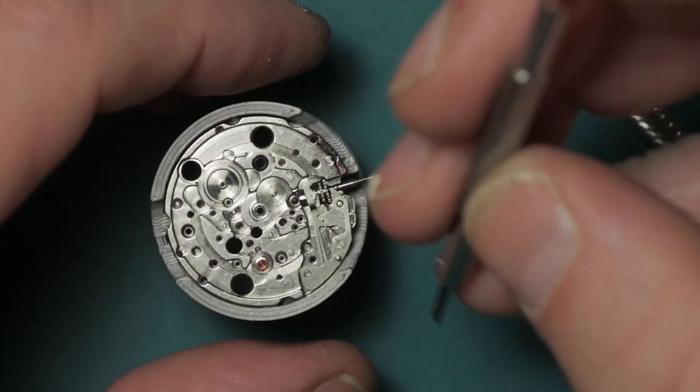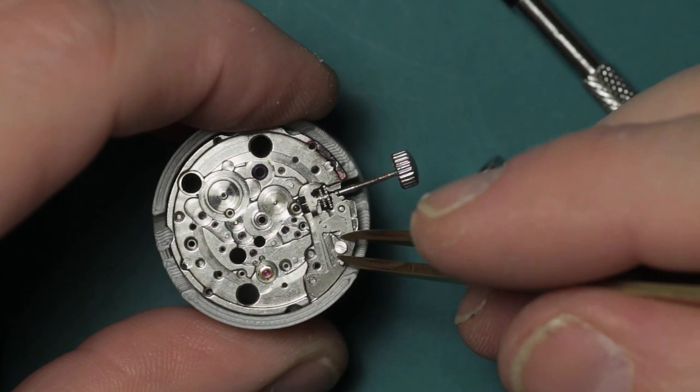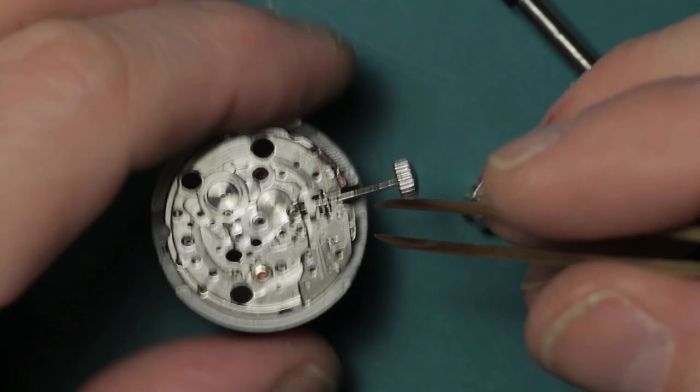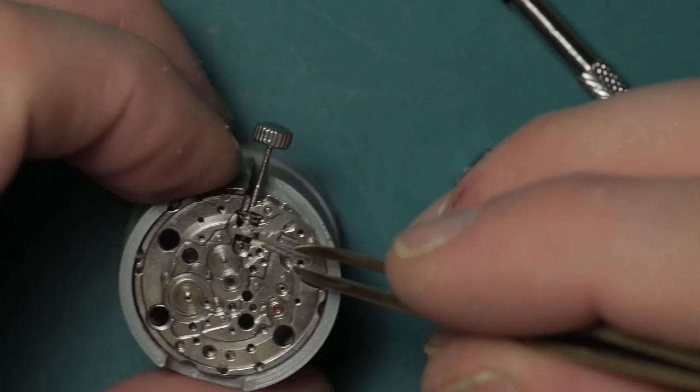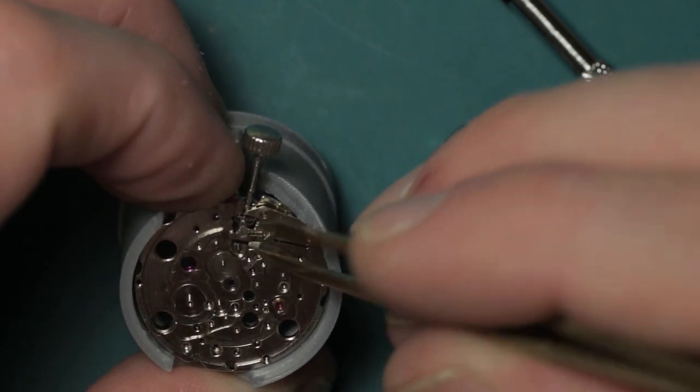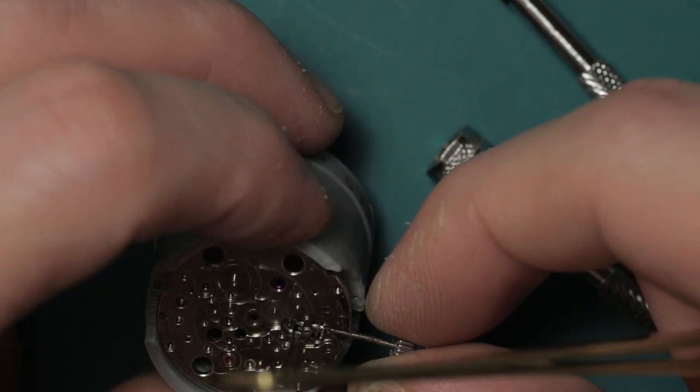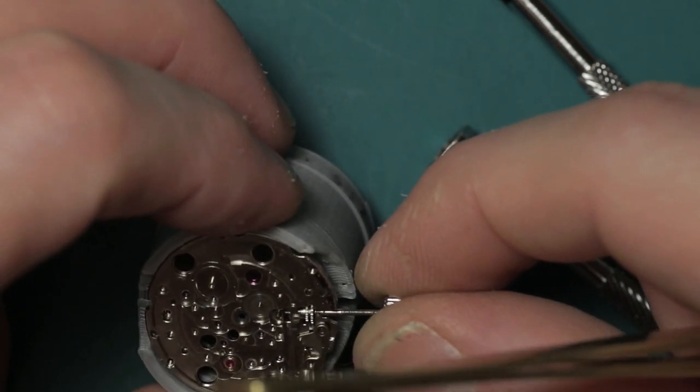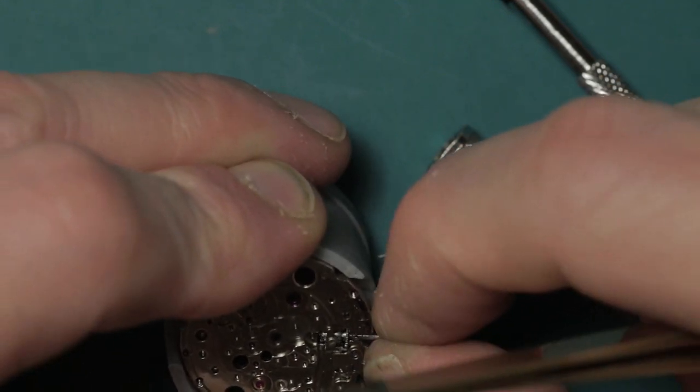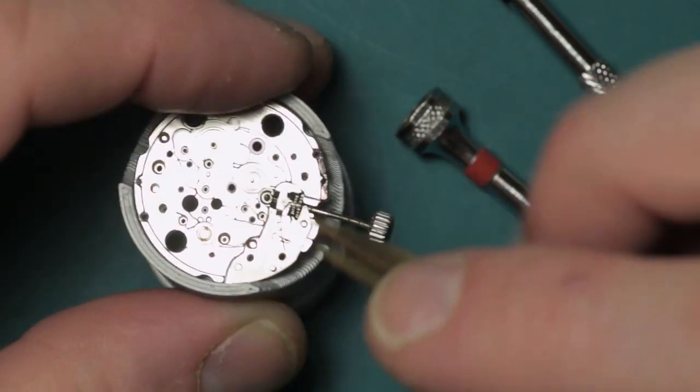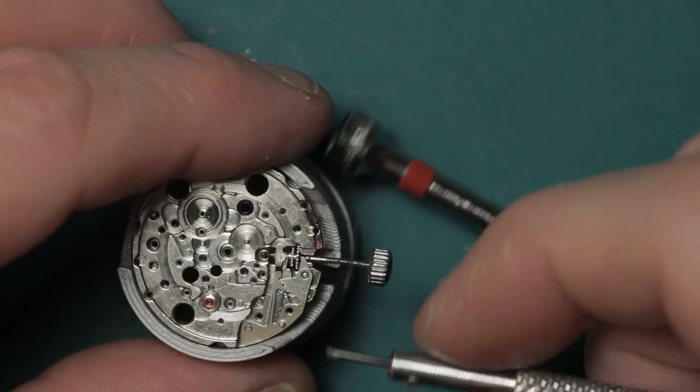And we move back onto the dial side to remove the final part, which is the keyless works. There's one screw which holds the setting lever spring in place, and then a long post which in this case is quite stiff, holding the setting lever spring and the yoke in place. It needed a little bit of poking around, and there I'm just checking to make sure that I've not actually missed anything that's securing it. Sometimes things can be stuck with old gunk and whatnot. Sometimes there are other things holding a part that you're not aware of, and it's always a good idea to double check before you go ahead and start tugging on a part to try and free it.